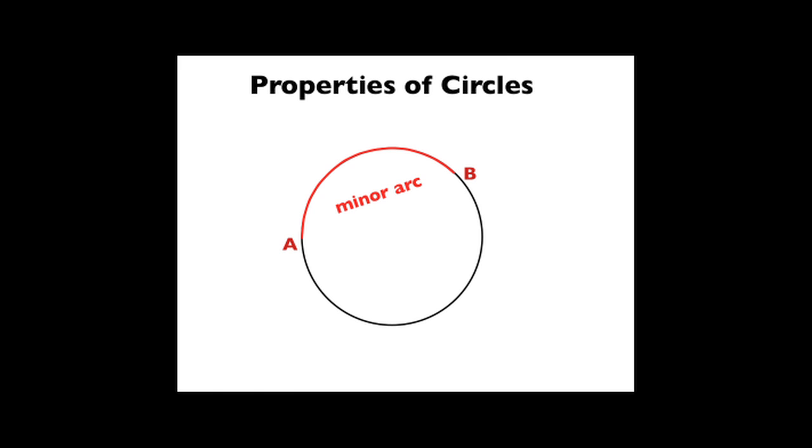A minor arc is one that is less than half of the circle around the outside of the circumference from A to B. A major arc is obviously the bigger one. So we have a minor arc, the smaller distance between A and B, and a major arc, the bigger distance between A and B.